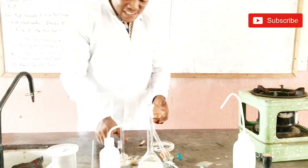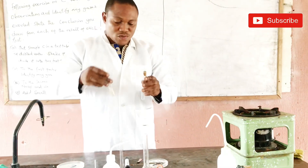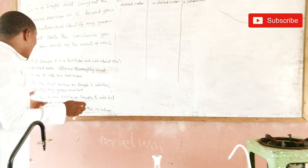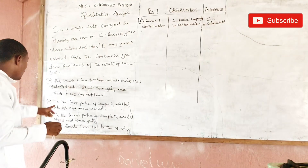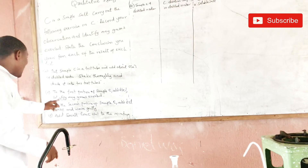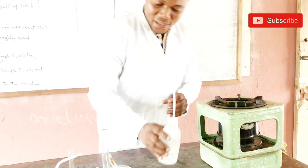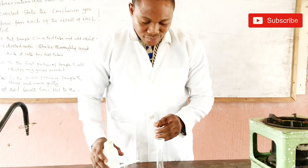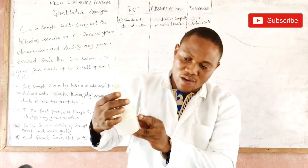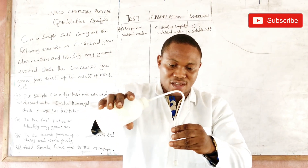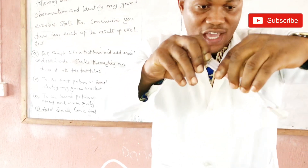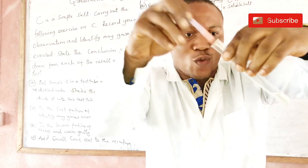I divide into two test tubes. To the first portion of sample C, add dilute HCl — identify any gas evolved. Pay attention: I'm adding dilute HCl to this now. On addition of dilute HCl, I can quickly test the evolved gas with my litmus paper. Number one observation: there is effervescence — that's the bubbling of gas in liquid, showing the evolution of gas.